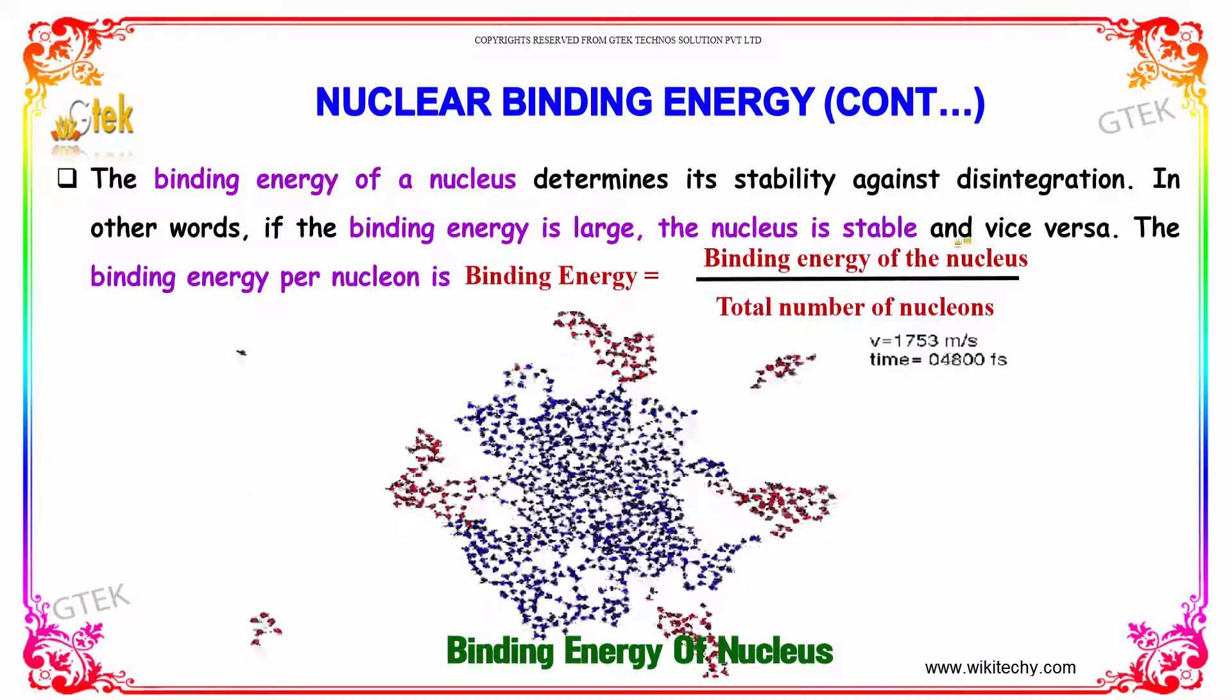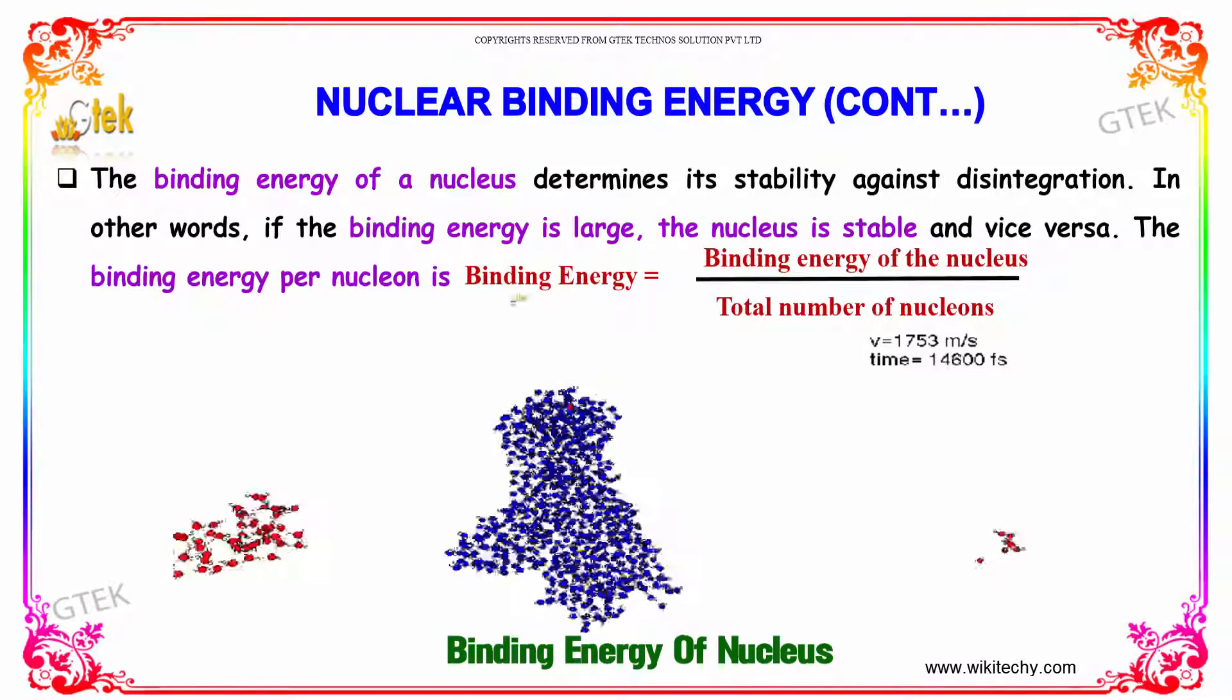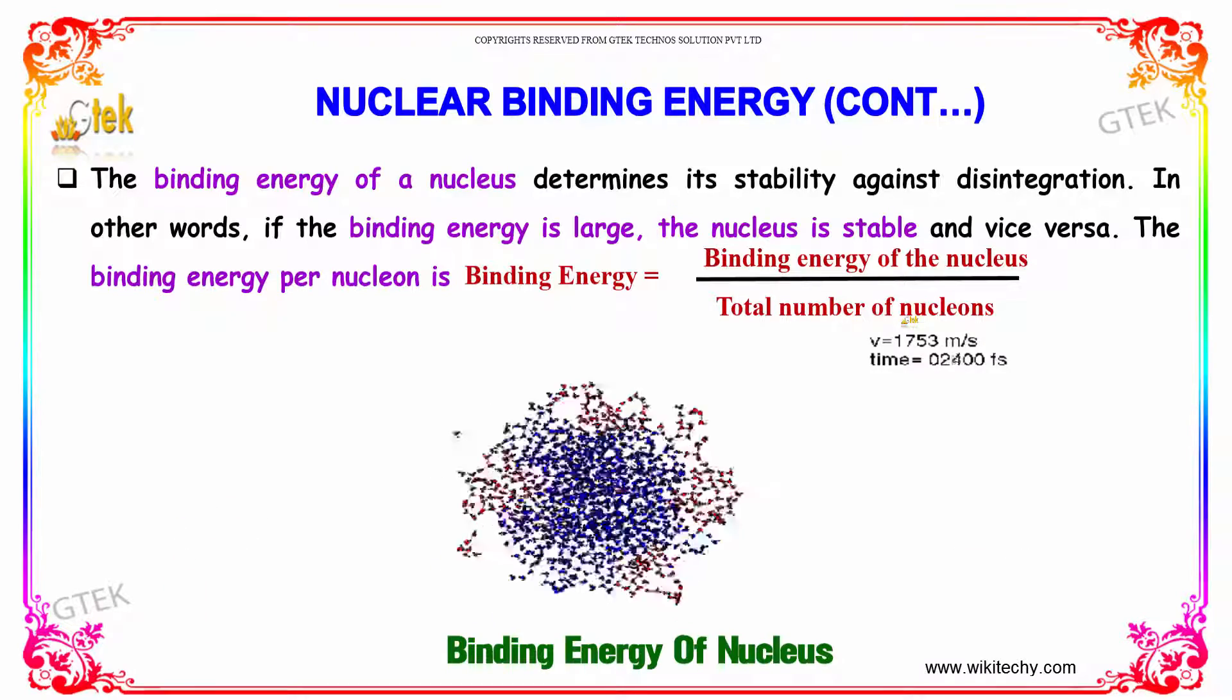If it is small, the nucleus is less stable. The binding energy per nucleon equals the binding energy of the nucleus divided by the total number of nucleons.